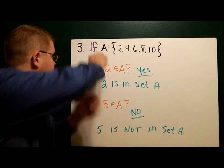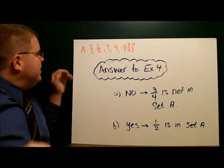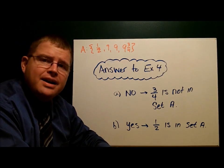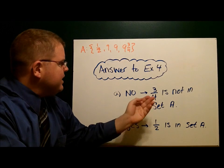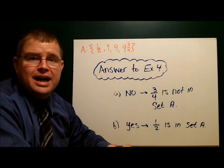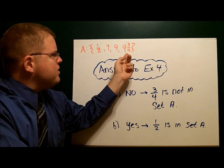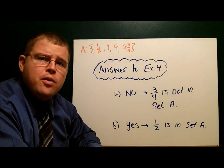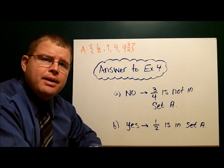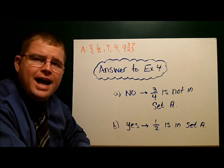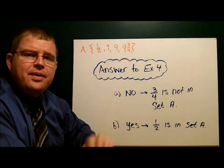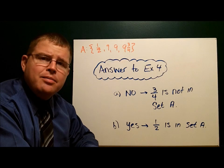Let's see how you did. The set given is {1/2, 7, 9, 9 3/4}. Is 3/4 an element of set A? No it's not. There is a 3/4, but it's 9 and 3/4. The number 3/4 is not in set A, therefore it's not an element. What about the number 1/2? Yes, the number 1/2 is right there, and therefore 1/2 is an element of set A.